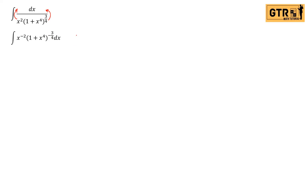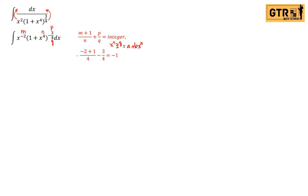Now apply the condition: (m+1)/n + p/q must be an integer. Here m = −2, n = 4, p = 3, q = 4. Substituting: (−2+1)/4 + (−3/4) = −1/4 − 3/4 = −4/4 = −1. Since the answer is an integer, we can use the substitution.